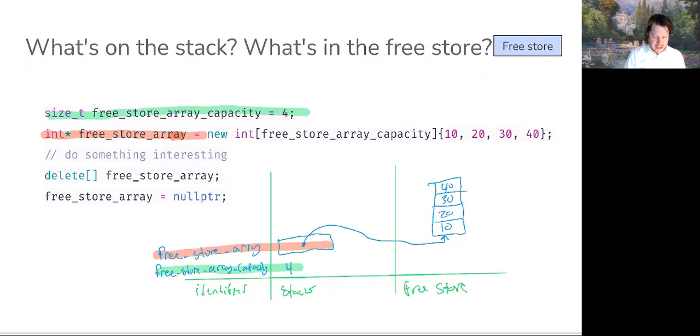Now let's say we do something with that object and we're ready to free it. When we hit this line of code here, delete free_store_array. We're passing to the delete operator the address of this object. What is going to happen at this point is the free store manager is going to label that memory as being deallocated.